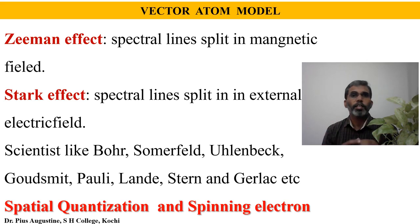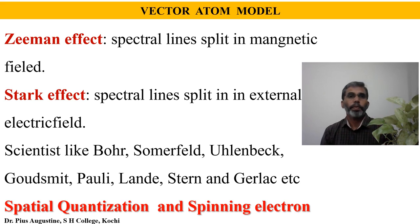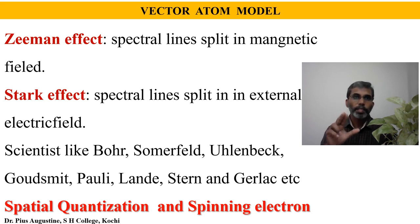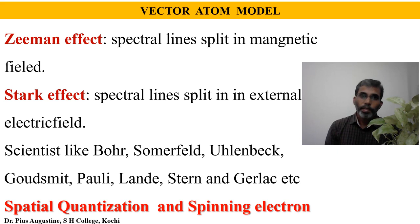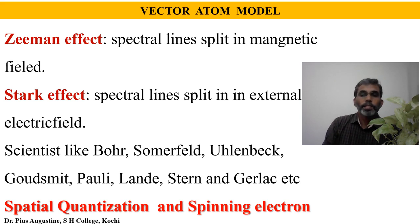They have done significant contributions to the formulation of this new model of atom, which we call the vector atom model. The vector atom model is centered around two main ideas: spatial quantization and the spinning electron hypothesis. Quantum mechanics explains normal Zeeman effect without taking into account the concept of electron spin, whereas to explain the anomalous Zeeman effect, the spinning of electron was also needed. The Stark effect is essentially the electrical analog of the Zeeman effect.